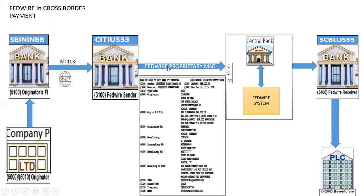On receiving the MT103, Citi US Bank identifies that the beneficiary's bank is within the US, so instead of forwarding via the SWIFT network, they use the local clearing and settlement mechanism — FedWire. Citi US then sends out the FedWire proprietary MT103-equivalent message. The tag for the originator (ordering customer in MT103 field 50) maps to FedWire tag 5000 or 5010, and the originator's financial institution maps to tag 5100.